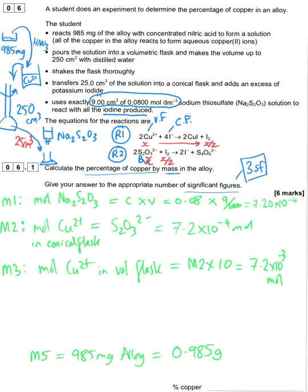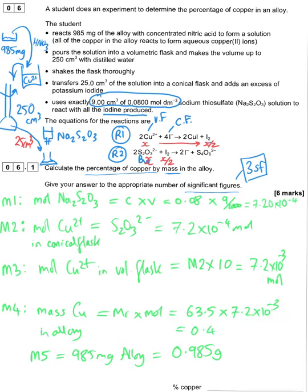Mass of copper = Ar × moles = 63.5 × 7.20 × 10⁻³ = 0.457 g. Percentage purity by mass = (mass of copper / mass of alloy) × 100 = (0.457 / 0.985) × 100. The answer should be given to three significant figures, consistent with the data provided.